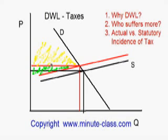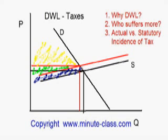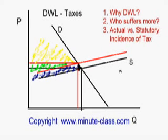Does this mean this is the total society surplus? No — we still have this area, which is the tax income of the government, and this is the real total society surplus. But the total society surplus is still reduced, because the quantity produced changed from this amount to this smaller amount. For this small triangular region, there is no tax income for the government, no consumer surplus, no producer surplus — this is just deadweight loss.